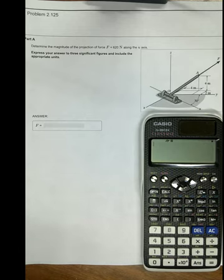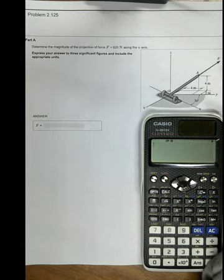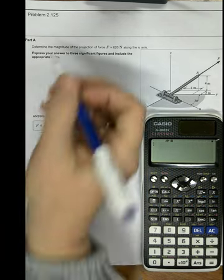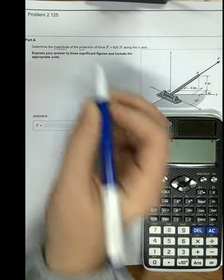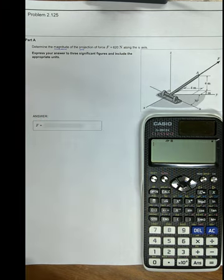I'd like to review this problem. It comes from section 2.9 regarding the dot product, but we're asked to find the magnitude of the projection, so we're making sure our answer comes out in magnitude form.